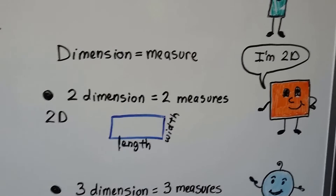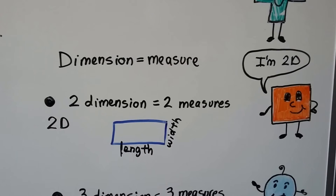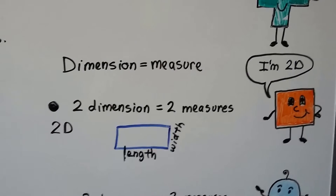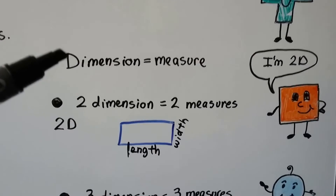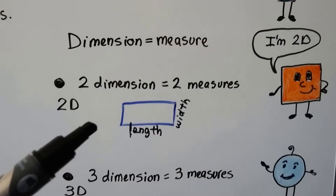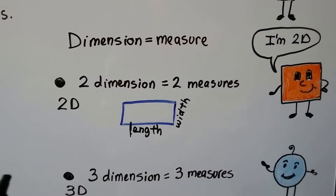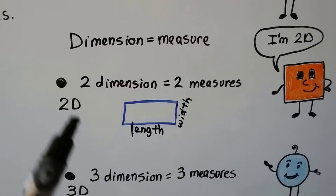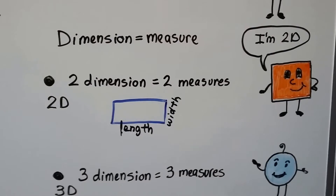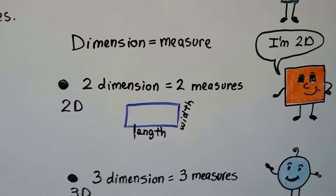If you've ever gone to a 3D movie and they made you wear the glasses so that you could see the movie in 3D — that means three-dimensional. Dimension means measure. If something's two-dimensional, it has two measures: a length and a width, like a picture or a piece of paper. That's 2D, two-dimension. My little square here is 2D because he's just flat on my board.